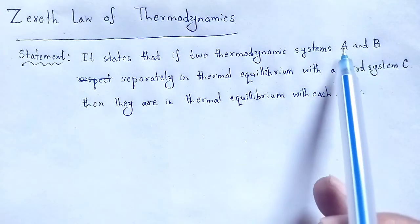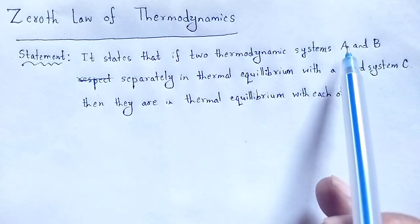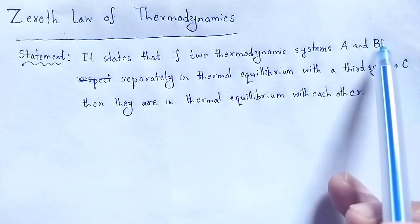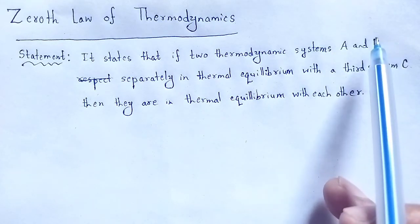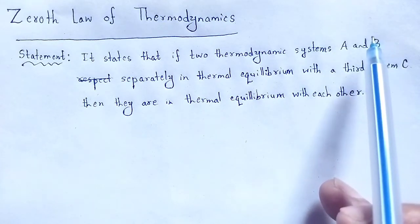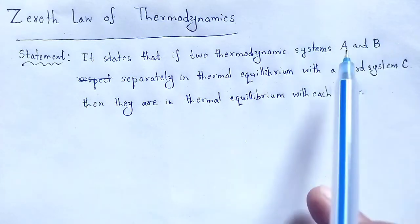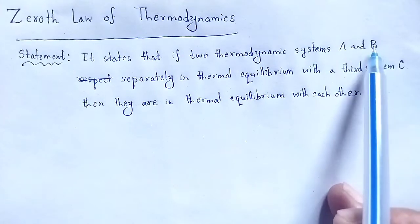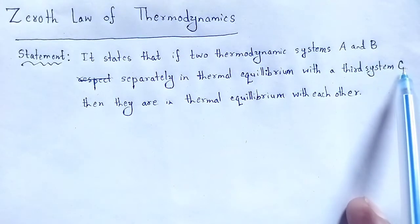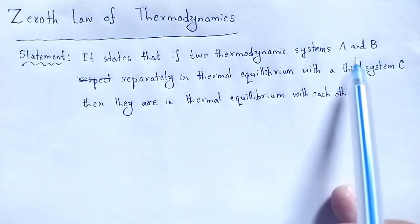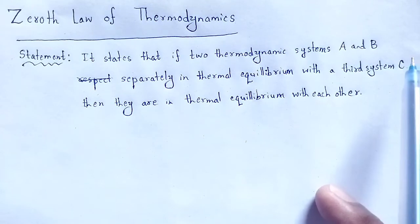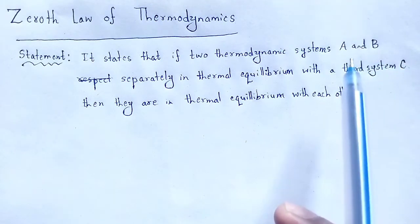This means A and B are in thermal equilibrium with each other. First, A is in thermal equilibrium with C, and B is in thermal equilibrium with C. Finally, we find that A and B are in thermal equilibrium with each other.